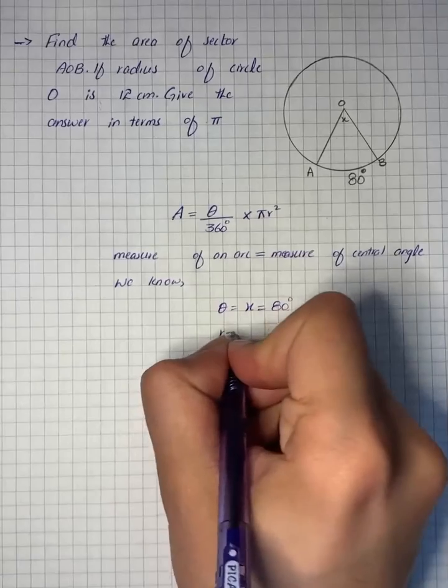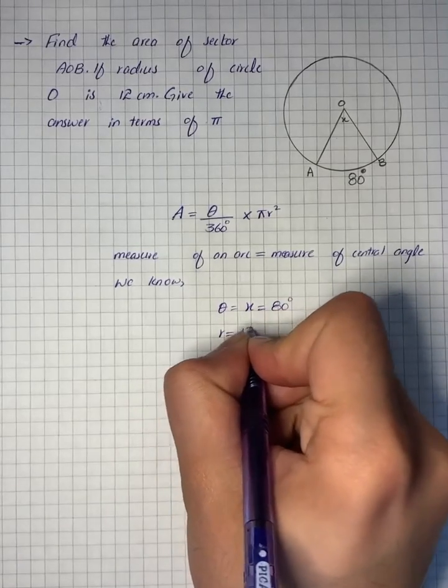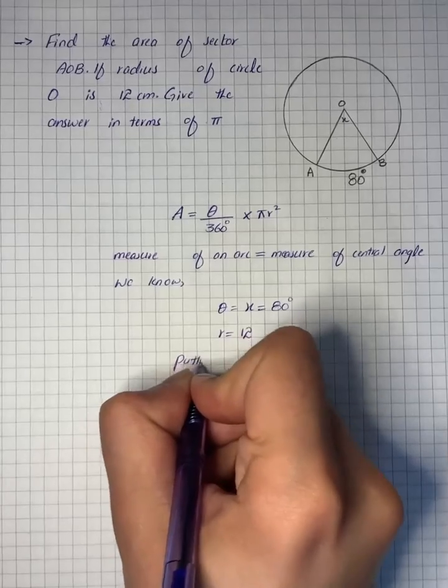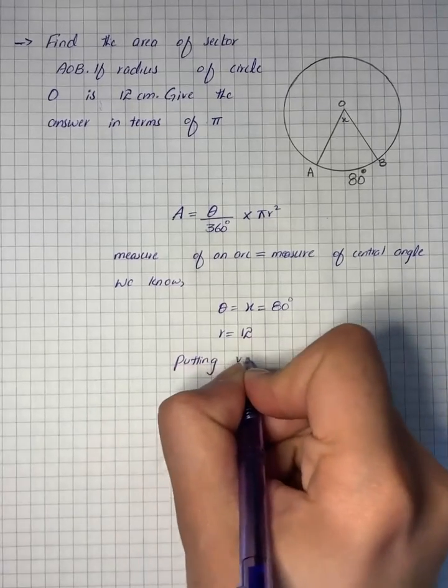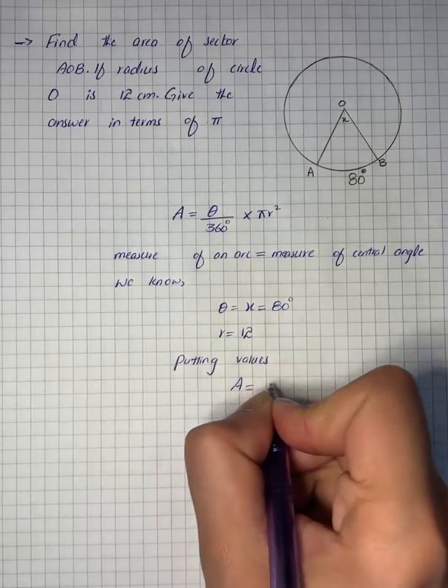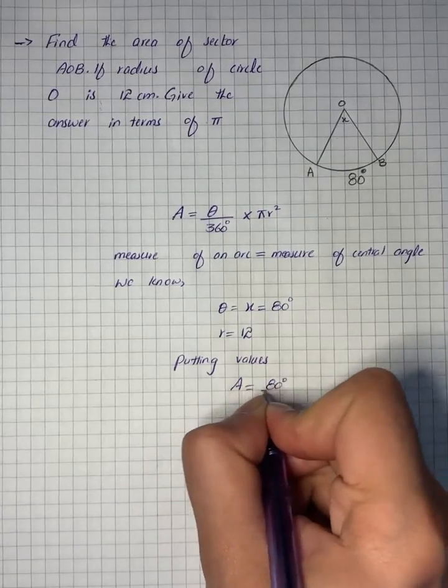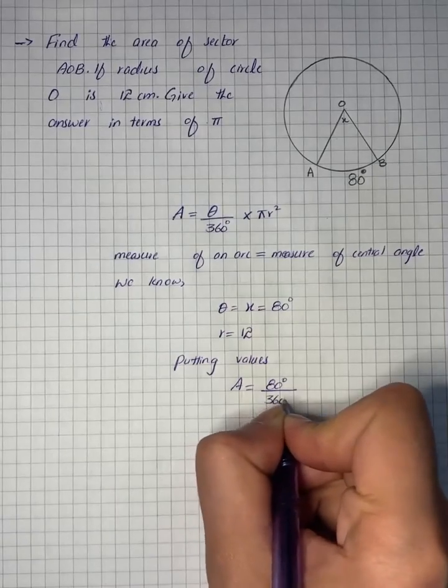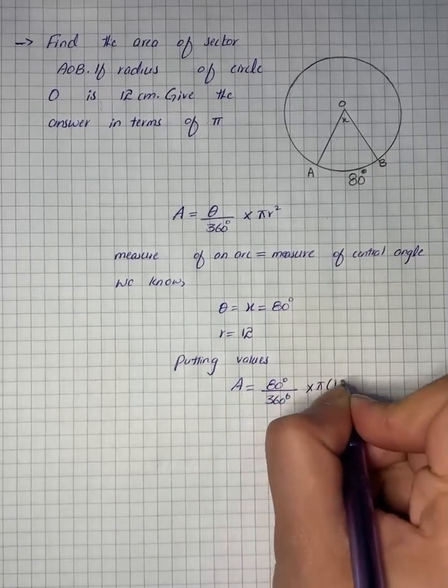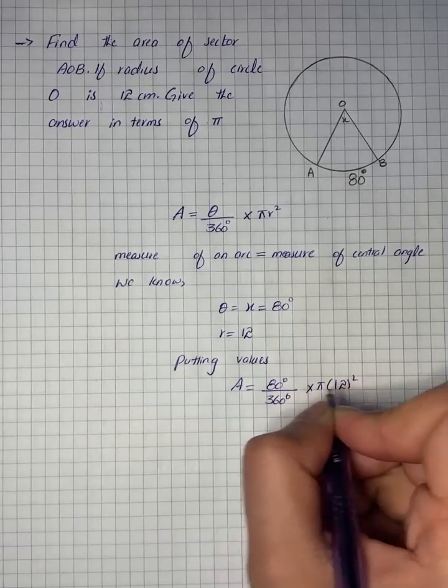And R is equal to 12. So putting values, A equals 80 degrees by 360 degrees into pi times 12 squared.